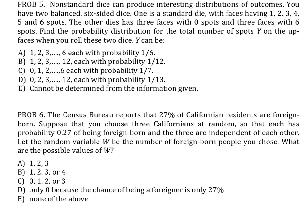What are the possible values of W? Well, you could have selected no foreign-born people, or 1 foreign-born, or 2 foreign-born, or 3 foreign-born. The answer must be C.